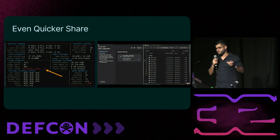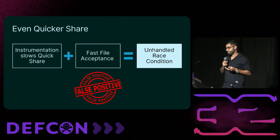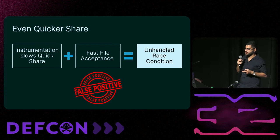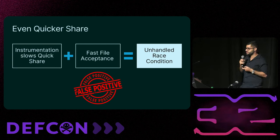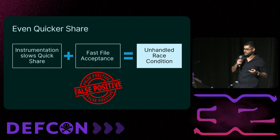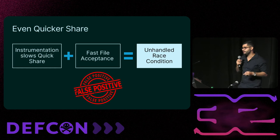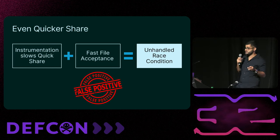Those patches made our fuzzing process about 10 times faster. Unfortunately, the speed improvement created a persistent issue — the combination of instrumentation, which significantly slows down the fuzzing target, and our patch to increase file transfer speed led to an unhandled race condition that was too complex to manage. As a result we received numerous crash reports we were unable to reproduce. We decided to abandon this approach and revert to the original functionality of QuickShare, despite it being slower.